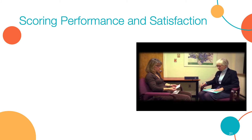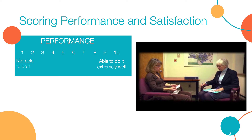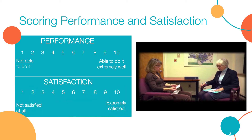Step 4 of the COPM requires participants to use a 10-point scale to rate their current level of performance and satisfaction for each of the five identified activities. The therapist asks, 'How would you rate the way you do this activity now?' — ranging from 1, not able to do it, to 10, able to do it extremely well. The therapist then asks, 'How satisfied are you with the way you do this activity now?' — ranging from 1, not satisfied at all, to 10, extremely satisfied.